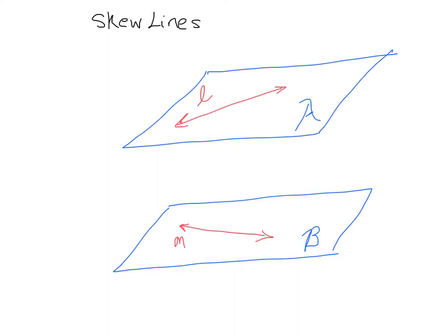So parallel, I'll write that down because this is super important here. Parallel planes will have skew lines. Because the planes will never meet, which means the lines will never meet.